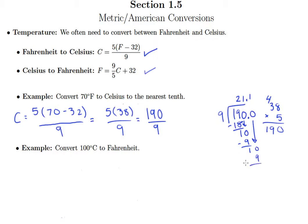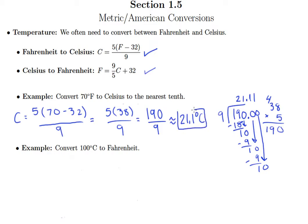Even though we're at the tenths place now, we need to go one more place to decide whether to round up or down. Since we get another 10 and another 1, we're going to round it down to 21.1 degrees Celsius. I use the squiggly equal sign to indicate it's approximately 21.1 degrees Celsius, not exactly.